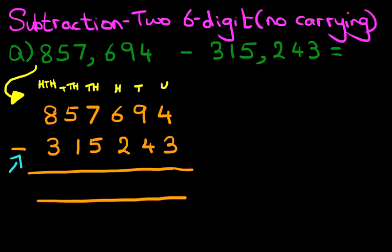First step: check the sign—it is minus. So let's do this. The units column first: 4 minus 3 is 1. Tens column: 9 minus 4 is 5. Hundreds column: 6 minus 2 is 4.